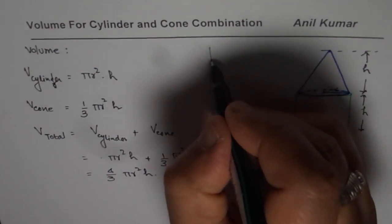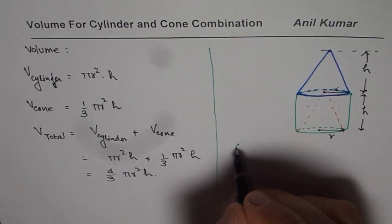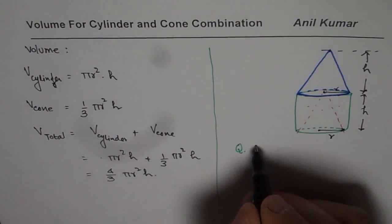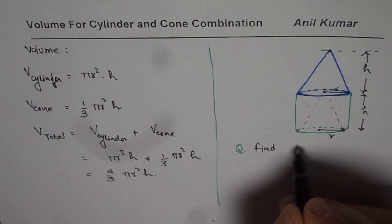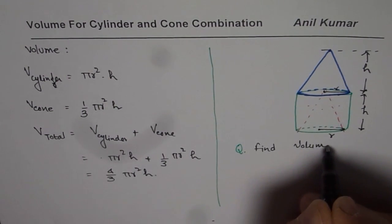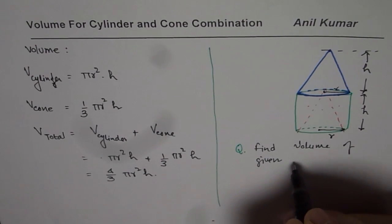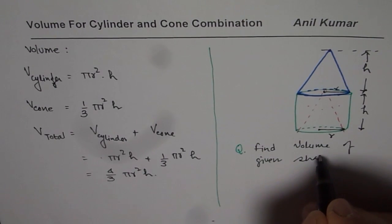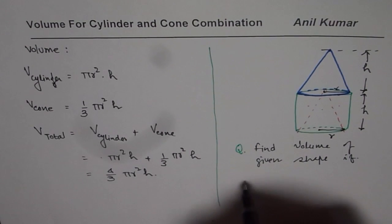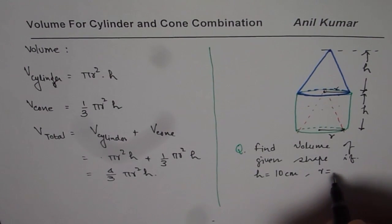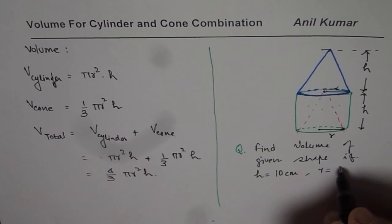Now here is a question for you based on the calculations which we have done. The question is find volume of given shape if h equals to 10 centimeters and r equals to 3 centimeters.